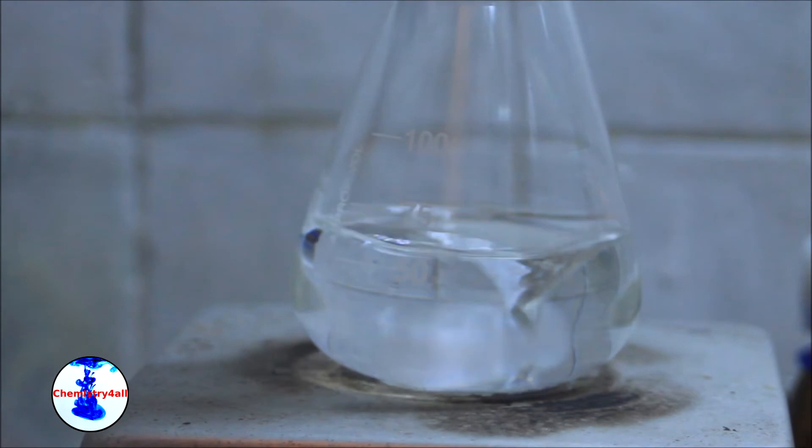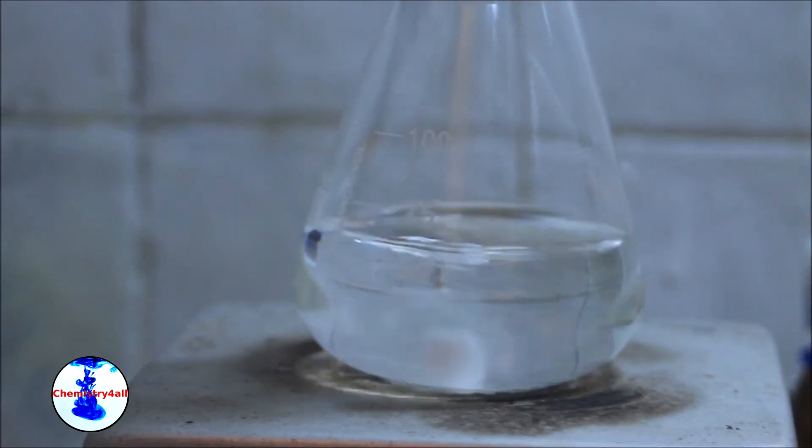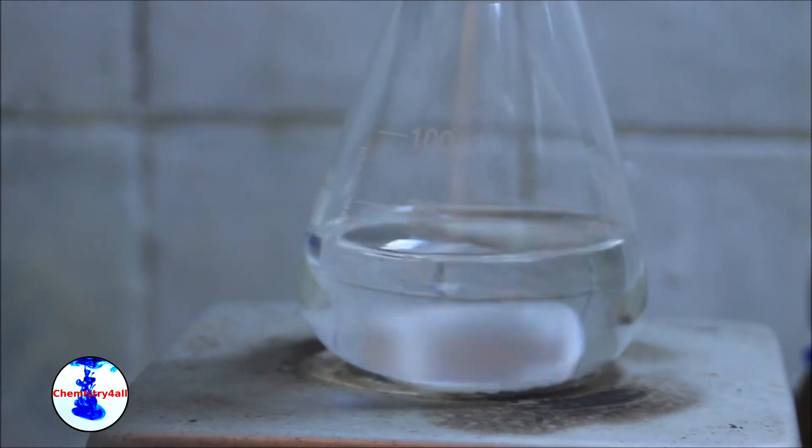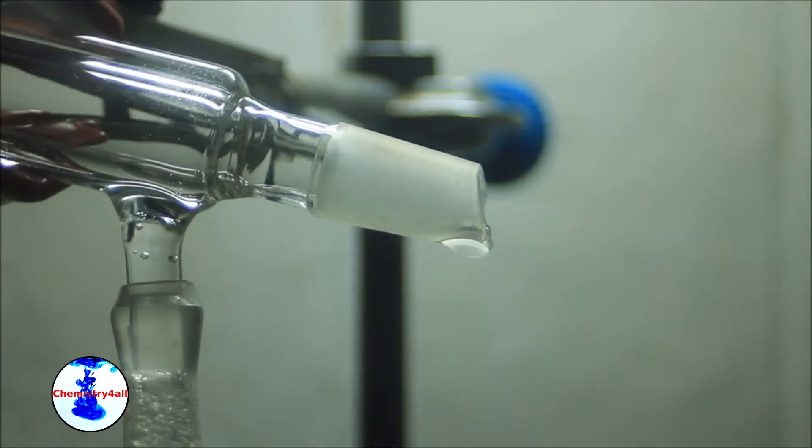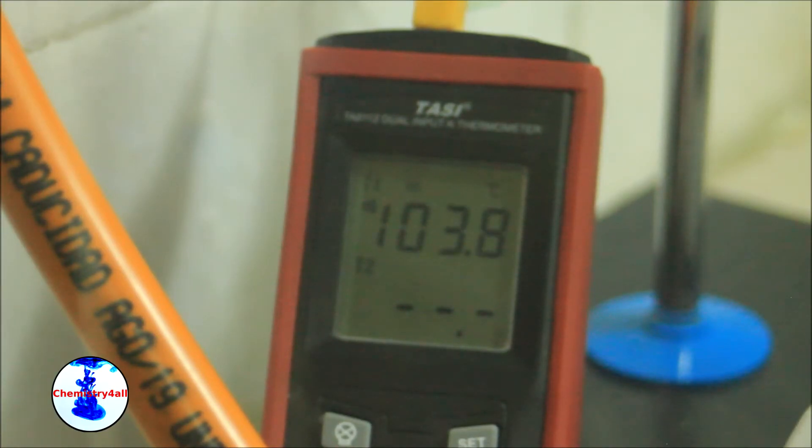Today we will make pure toluene from a toluene based paint remover by terms of fractional distillation. I am currently planning to use the toluene to synthesize benzoic acid, from which I will make methyl benzoate.